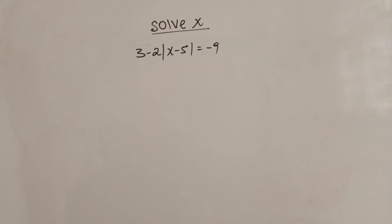Hello guys, welcome to my channel. Today we have an absolute value equation. We are asked to find the value of x from this equation: 3 minus 2 times the absolute value of x minus 5, which is equal to negative 9. So how do we find the value of x here?